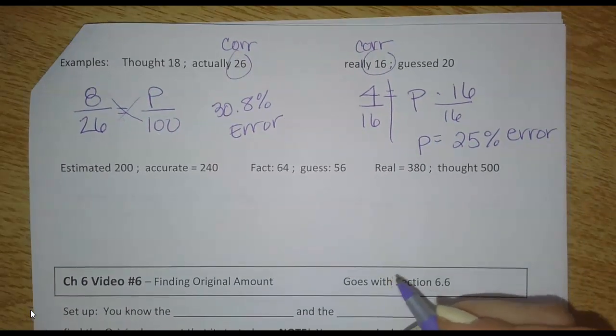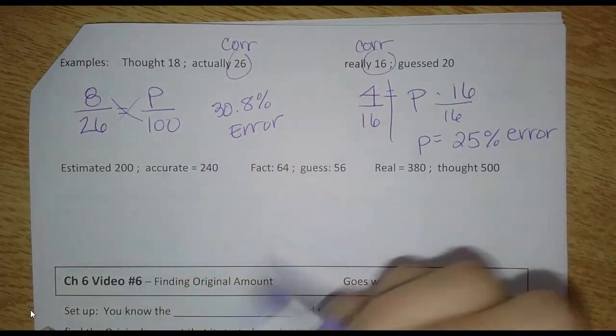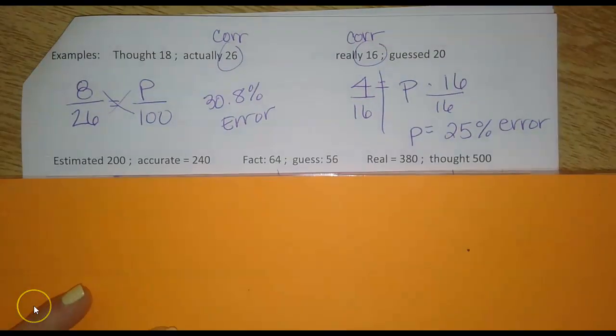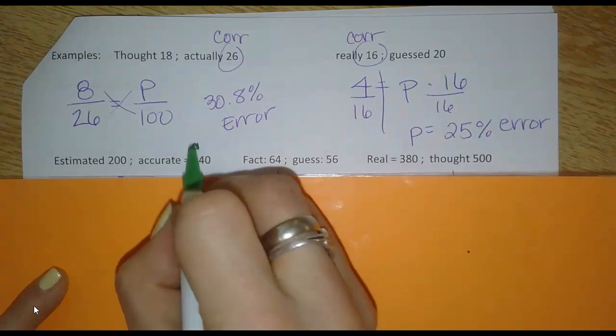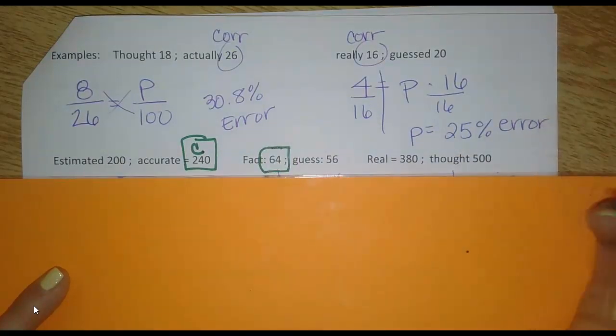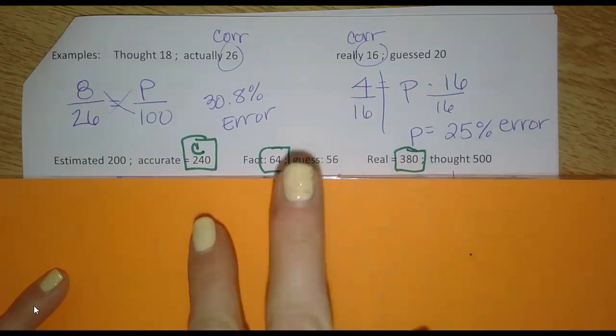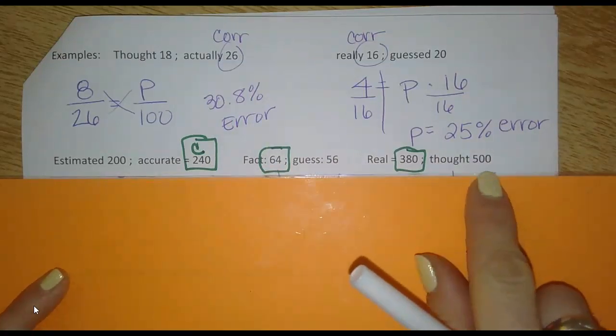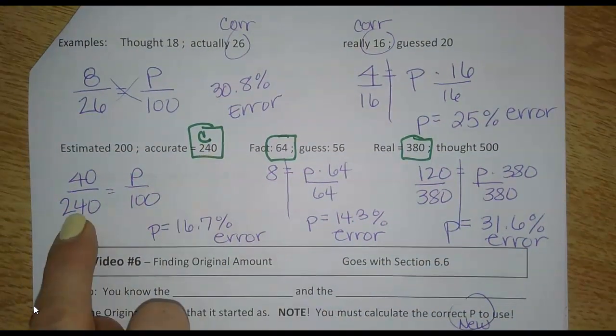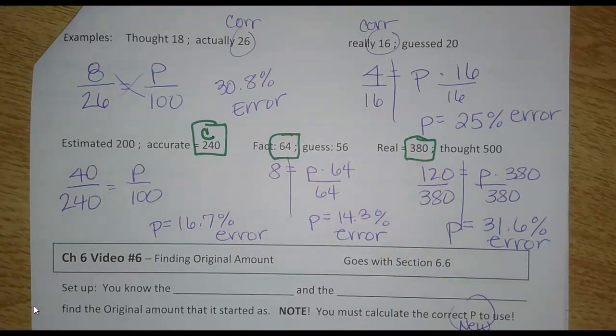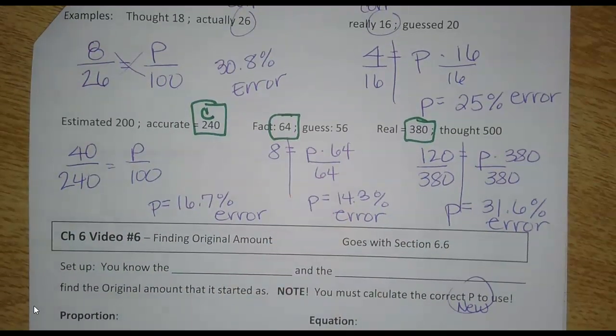So there's three more here. Just pay attention to the words, maybe figure out first which one is the correct value that you're going to use, and then solve these three. Let's label first and make sure we know which one we're going to use as the correct number. So this says accurate, this would be the correct number that I'm going to put in for W. Fact, this would be the correct number that I use for W. And then the real number. So it might be listed first, it might be listed second, it might be the bigger number, it might be the smaller number. You have to use the wording of the problem to help you figure out which one to put in for W. So you can see here, I put the whole or the original as 240, 64, 380, and then either proportion or equation, solve it from there. And I got these answers.